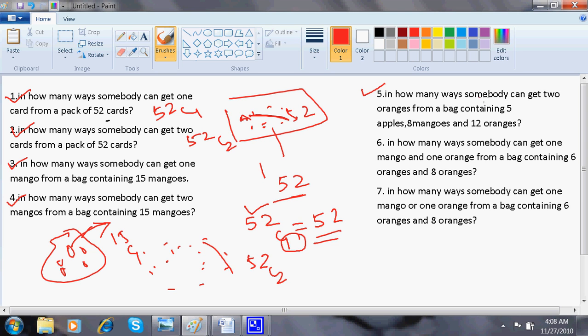Now, question number five. In how many ways can somebody get two oranges from a bag containing five apples, eight mangoes and 12 oranges. So I have a bag which is having 12 oranges, five apples and eight mangoes. I'll be getting two oranges only when my hand is going only to the orange part.